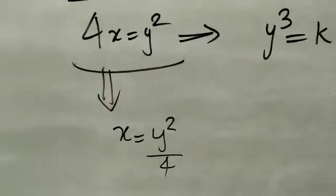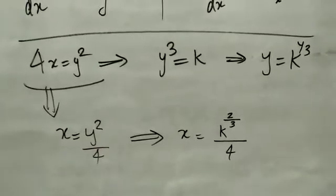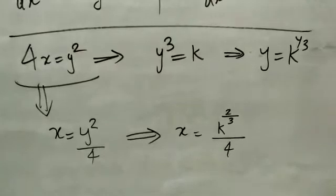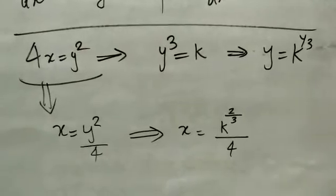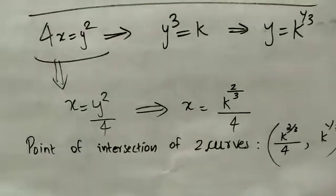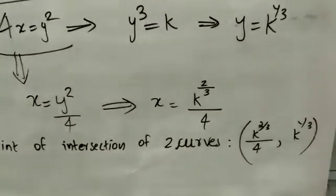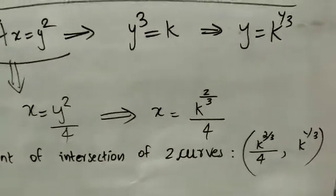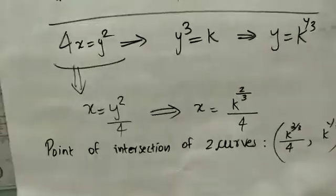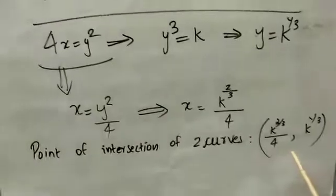Solving simultaneously: from 4x = y², we get x = y²/4. From 4xy = k, substituting, we get y = k^(1/3). Substituting the y value into the first equation gives x = k^(2/3)/4. So the point of intersection is at x = k^(2/3)/4 and y = k^(1/3).